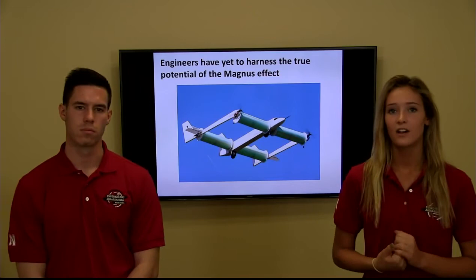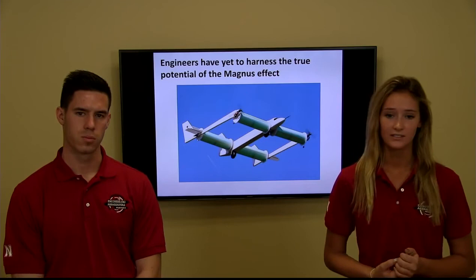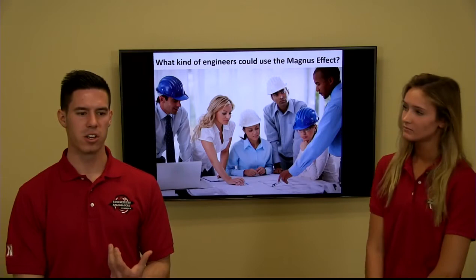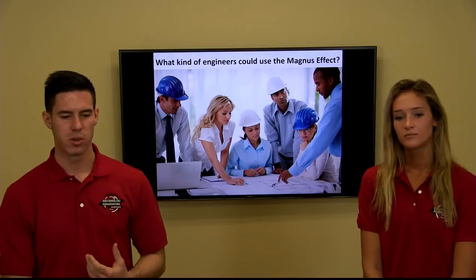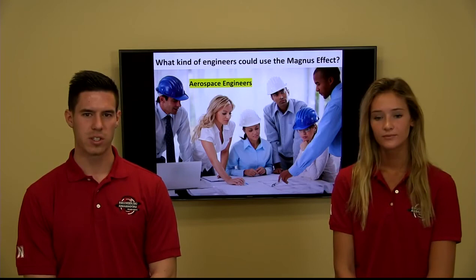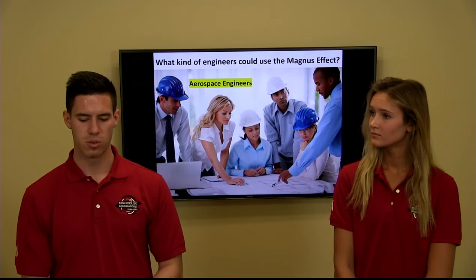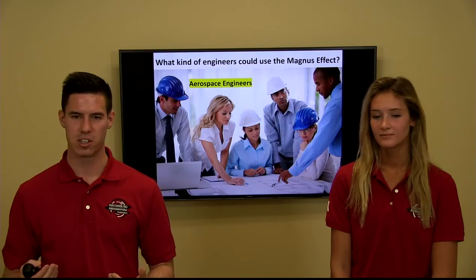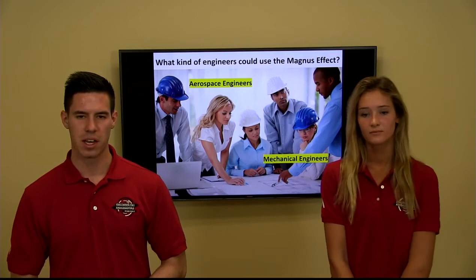Now that you've seen some ways engineers have used the Magnus effect, it's clear they haven't yet harnessed its true potential. We pinpointed two main types of engineers who would likely use it in the future. The first is aerospace engineers, who use their knowledge of airflow and aerodynamics to create mechanical solutions — they could use the Magnus effect to make a more efficient airplane than Butler Ames's design.